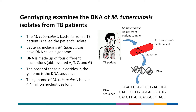Genotyping examines the DNA of M-tuberculosis isolates from TB patients. The M-tuberculosis bacteria from a TB patient is called the patient's isolate. Bacteria, including M-tuberculosis, have DNA called a bacterial genome. DNA is made up of four different nucleotides, abbreviated A, T, C, and G. The order of these nucleotides in the genome is the DNA sequence.